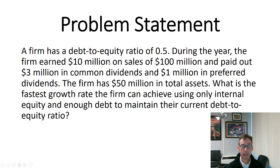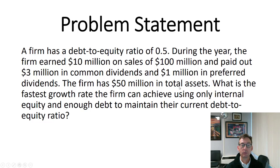They paid out 3 million in common dividends and 1 million in preferred dividends, so total dividends are 4 million. With net income of 10 million and dividends of 4 million, retained earnings must be 6 million. The firm has 50 million in total assets. The question asks: what is the fastest growth rate the firm can achieve using only internal equity and enough debt to maintain their current debt-to-equity ratio?